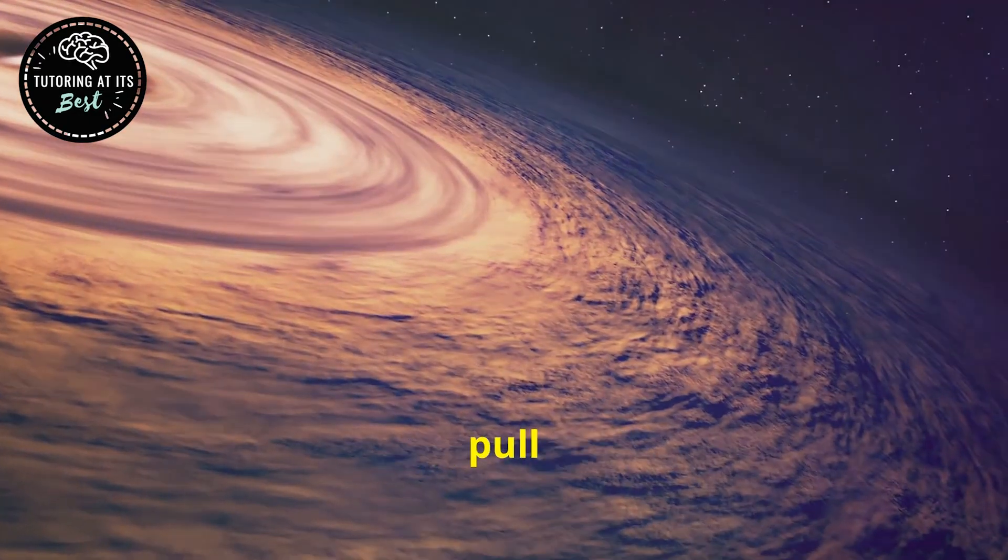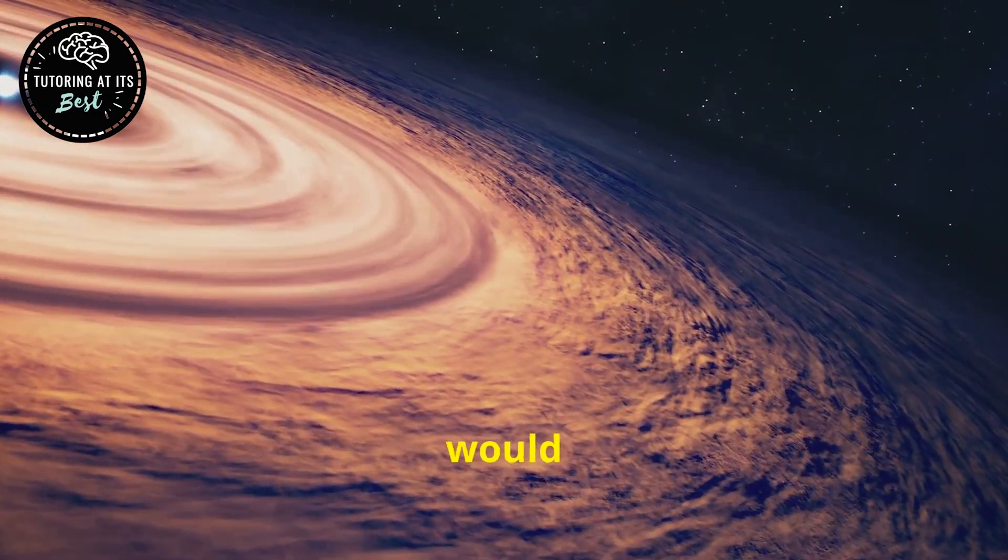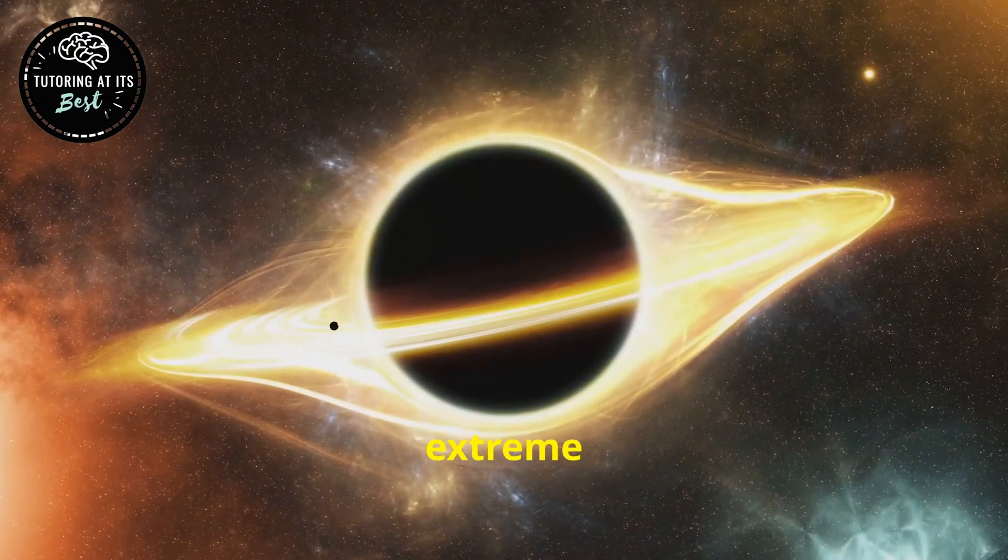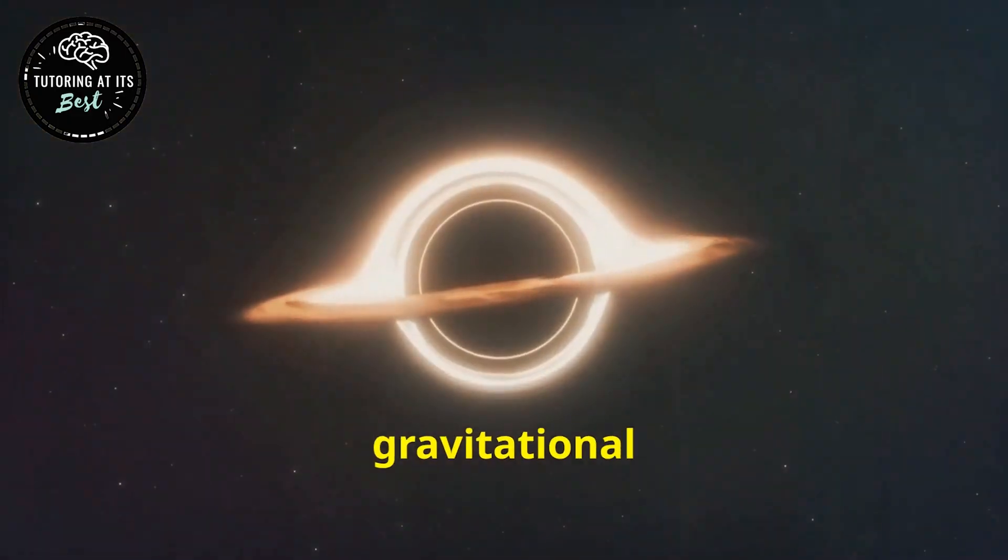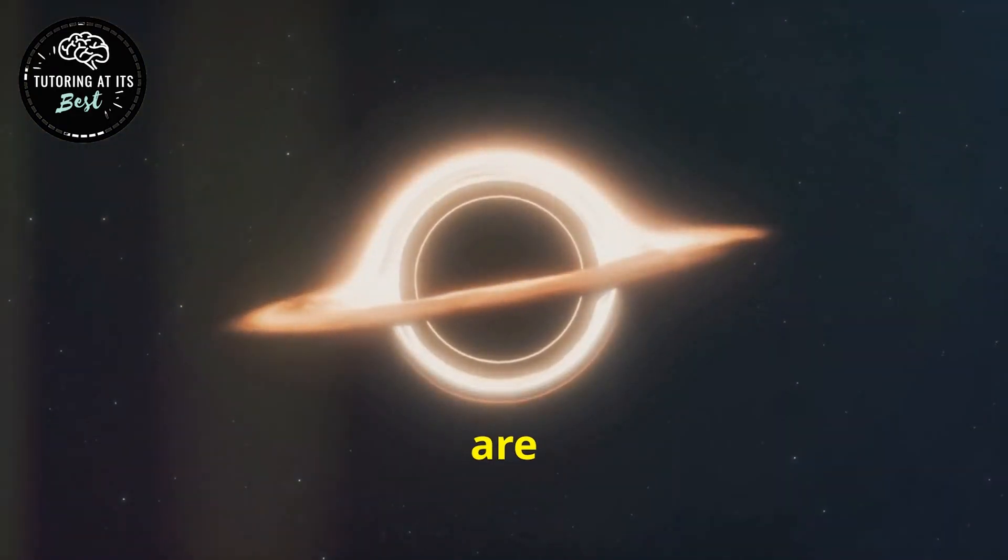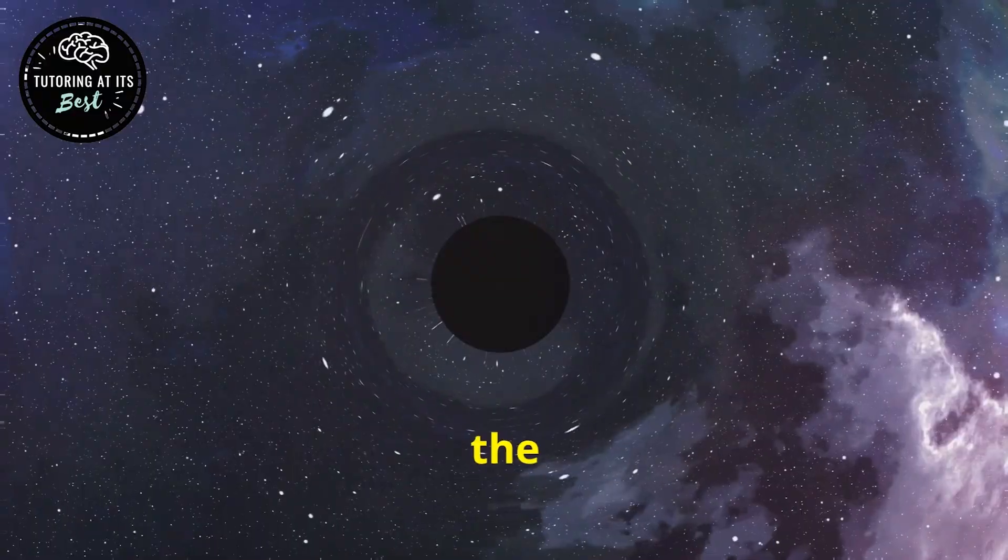The difference in gravitational pull between your head and your feet would be enormous, stretching you like spaghetti. This extreme gravity is what prevents light from escaping a black hole. The gravitational forces around a black hole are mind-boggling. They represent the ultimate extreme in the universe.